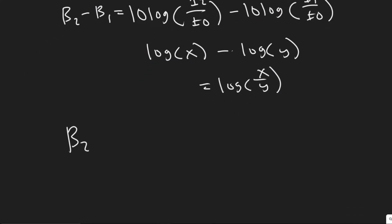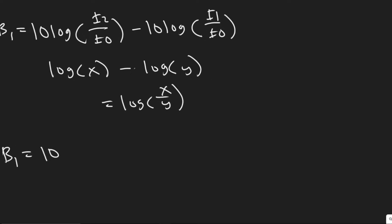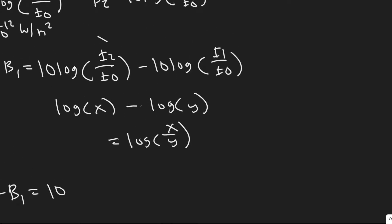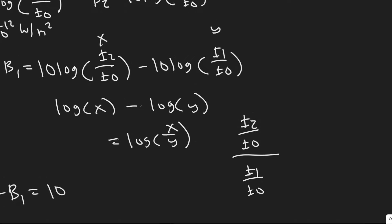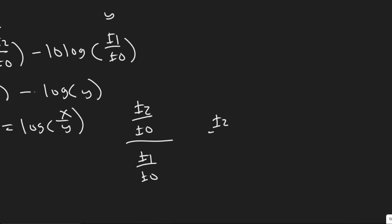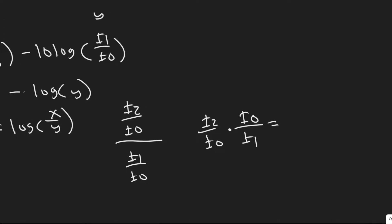You'll have β₂ minus β₁ equals 10, and then we're going to combine these two log terms here. So if we have x, let's just assume this one is x, this is y, you'll have i₂ over i₀ divided by i₁ over i₀. What we can do here is copy-flip. So i₂ over i₀ times, and then we just flip this one here, so times i₀ over i₁. Notice here your i₀s are going to cancel when you multiply across.